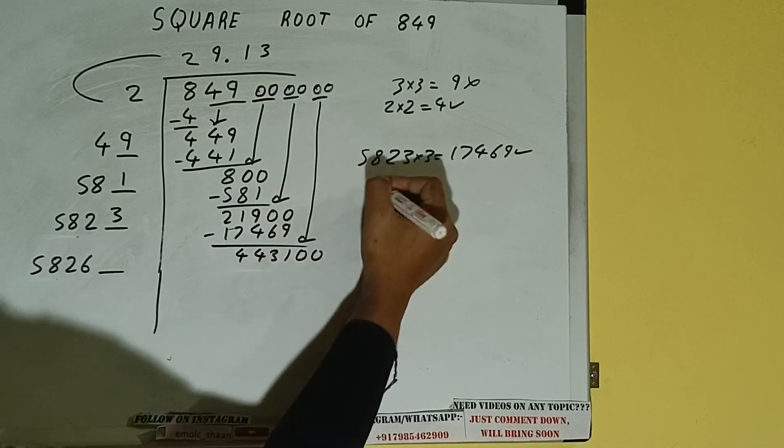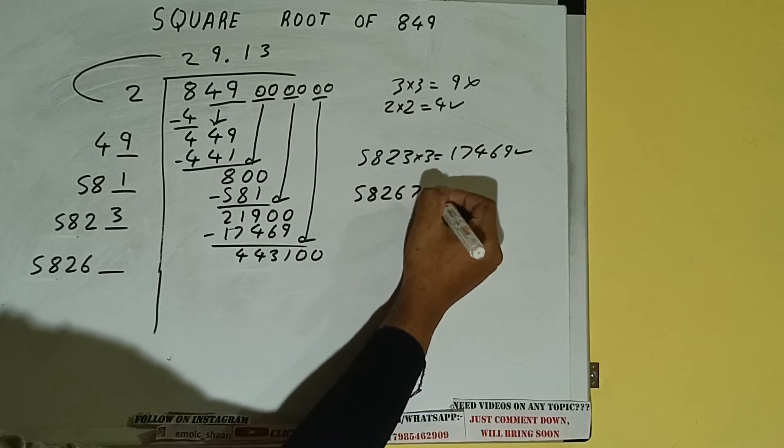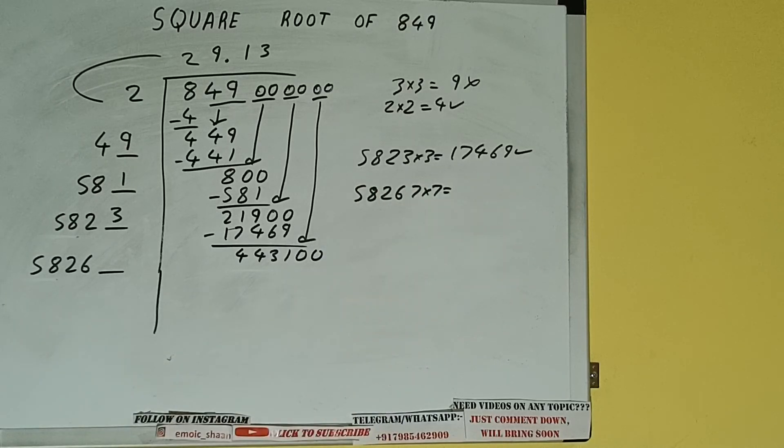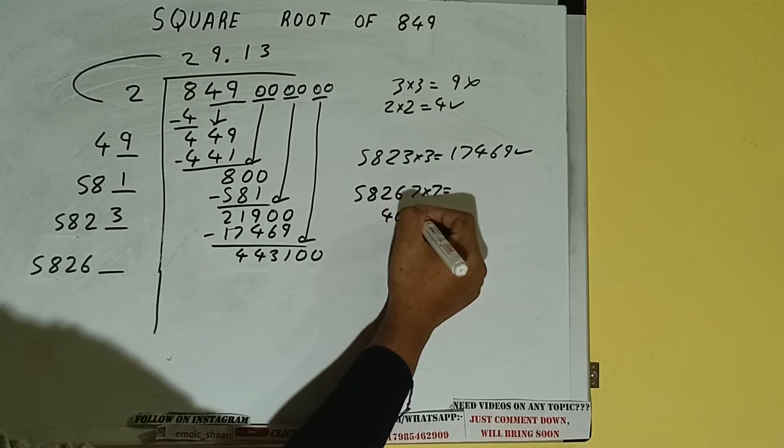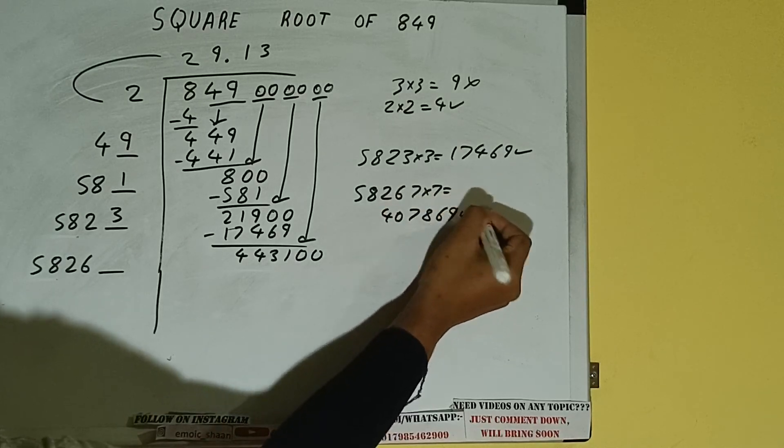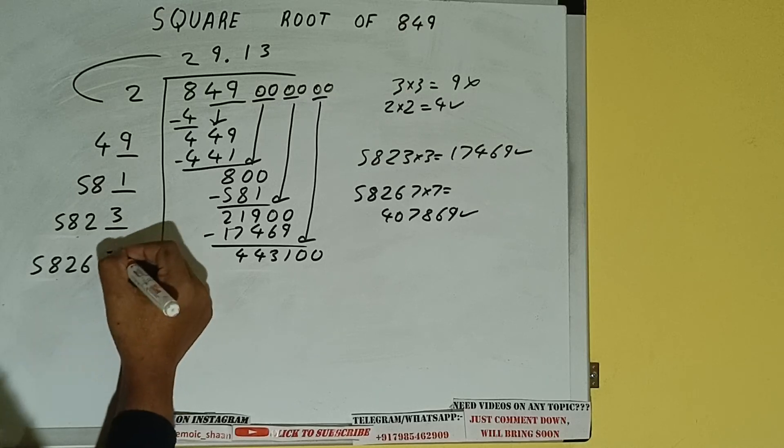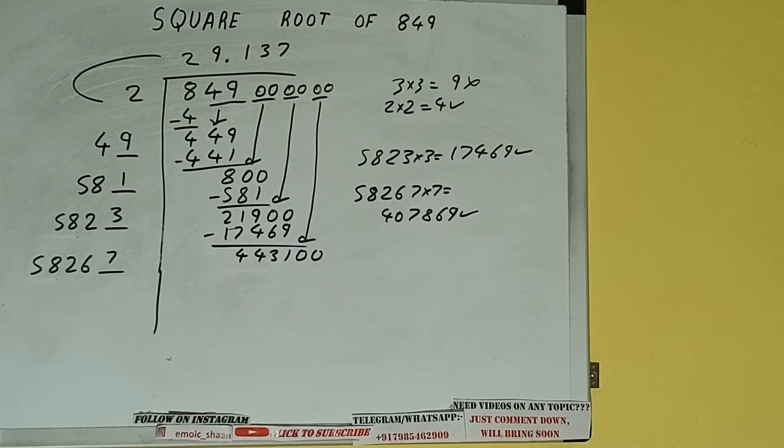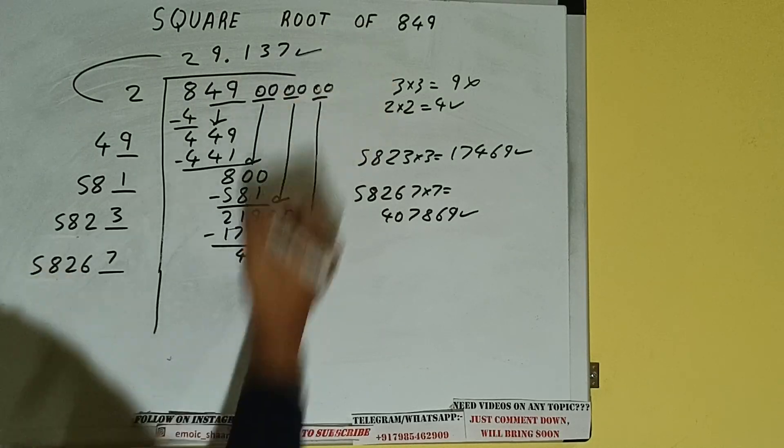We have to try 7 times. 58267 into 7 we can try, and we'll be having 407869 which is good to take. So 7 here and 7 here. But we don't need to calculate because we got the answer correct up to 3 decimal places.